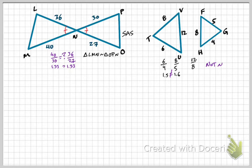Even though 12 divided by 8 is also 1.5, because one of those ratios is not equal to the other two, these triangles are not similar.